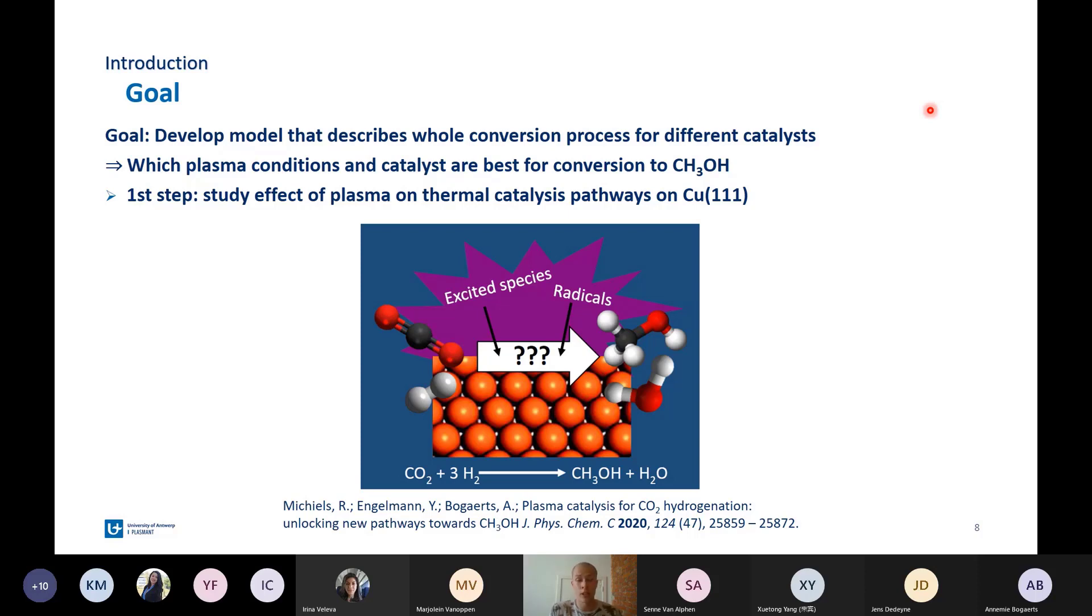First of all, for the first step of my PhD, I developed a model that describes the effect of two kinds of plasma species, namely radicals and vibrationally excited species, on the classic catalysis process on copper.